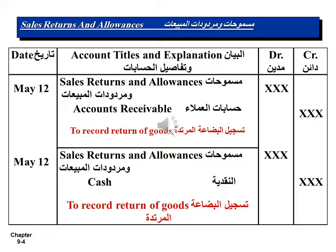Recording Sales Returns and Allowances. The first entry for recording returns of goods on credit sales: Sales Returns and Allowances, debit; Accounts Receivable, credit. Sales Returns and Allowances on Cash Sales requires: Sales Returns and Allowances, debit; Cash, credit. Description: to record returns of goods.